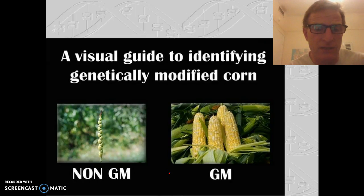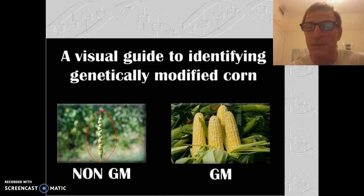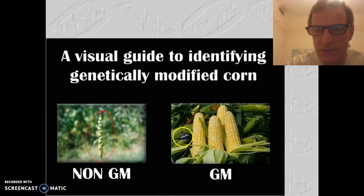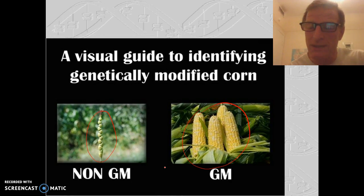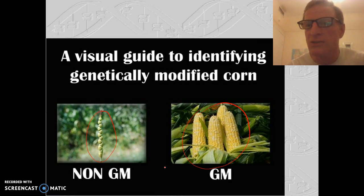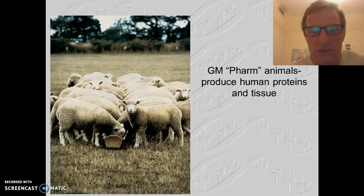Genetically modified organisms are another example. This is what corn looked like before we started genetically modifying it through selective breeding. Through selectively picking certain genes we get corn that looks like modern corn. But we've also inserted bacterial genes into corn to protect it from pests, and inserted genes that increase the nutrients of certain plants — going well beyond just selective breeding to inserting genes from very different organisms.